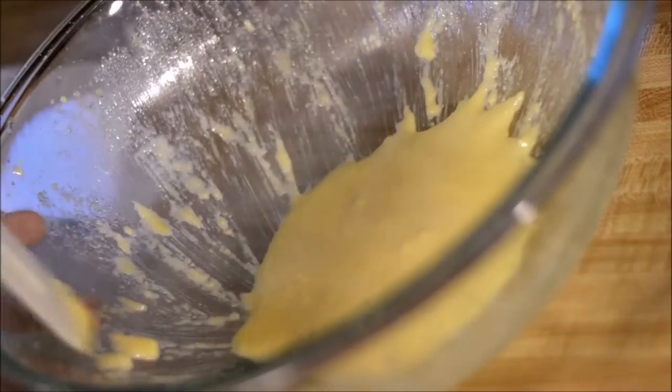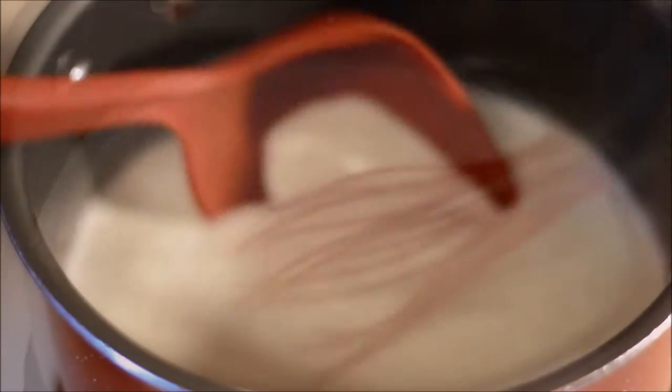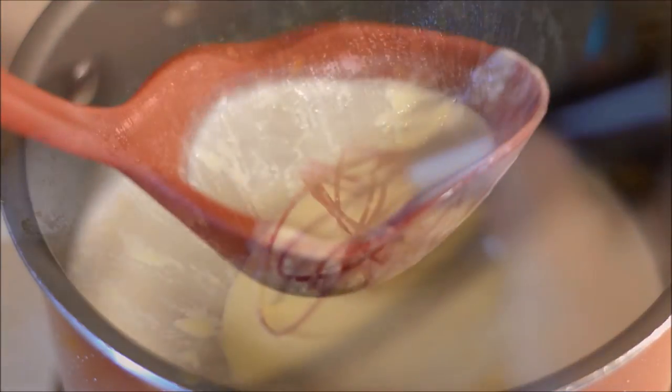Now that the egg yolk mixture is a pale yellow and the cream mixture is simmering, use a ladle to add the simmering cream mixture into the egg yolk mixture one scoop at a time, stirring with a whisk as constantly as you can. This is so we do not make scrambled eggs.